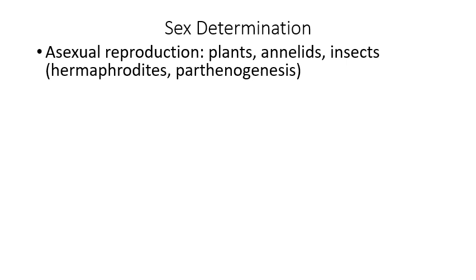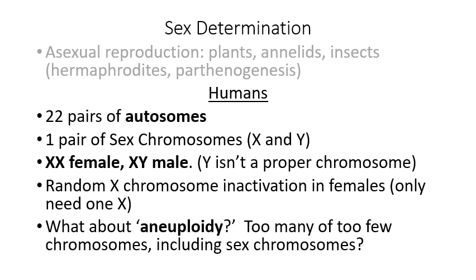In humans, we only reproduce through sexual reproduction. Humans have 22 pairs of autosomes — chromosomes not involved in sex determination — and one pair of sex chromosomes, either X or Y. If you have two X chromosomes, you're female; if you have X and Y, you're male. The Y chromosome is quite small and contains only a few genes. Males have only one X, while females have two; females generously inactivate one through random X chromosome inactivation.